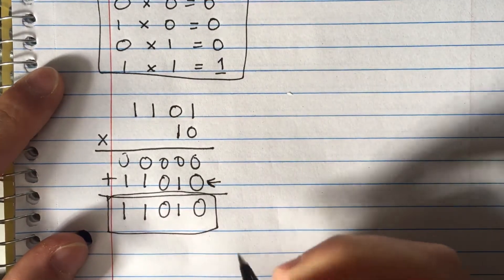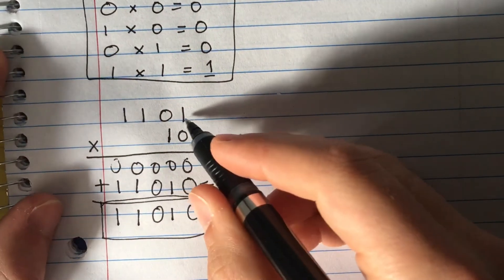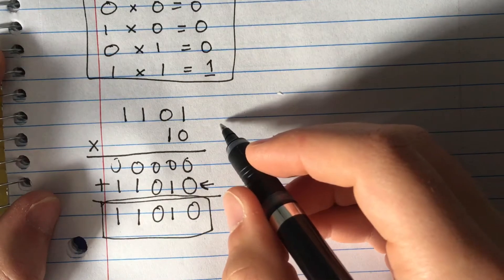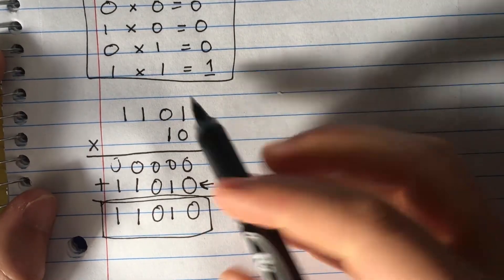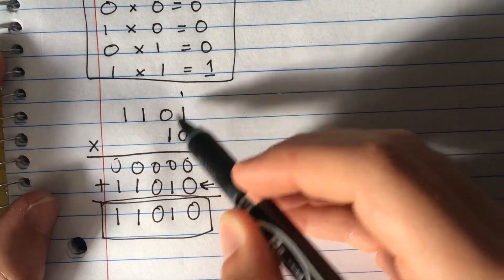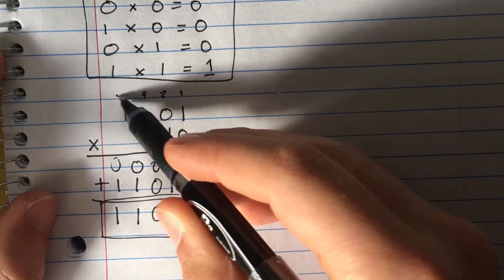Let's check if it's right. We had 1101 in binary. Converting to decimal: that would be the ones place, the 2s, the 4s, the 8s. So 8 plus 4 plus 1 equals 13.